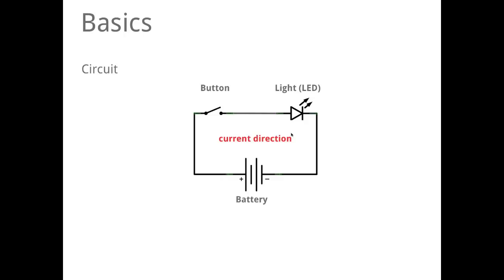Okay, so our current goes from the plus to the minus and this is the direction. Some components, by the way, have to be placed in the right direction like the LED. This little schematic symbol shows the direction with this little arrow here.